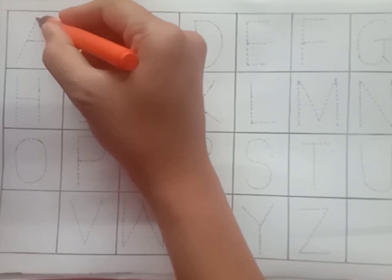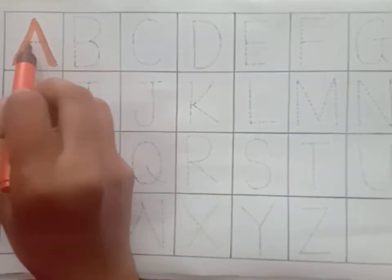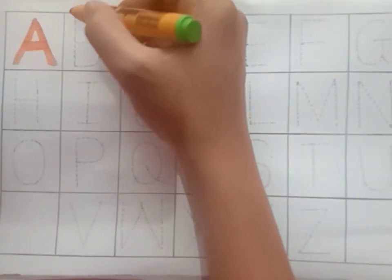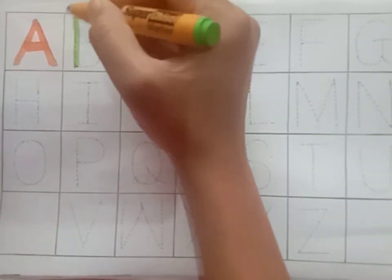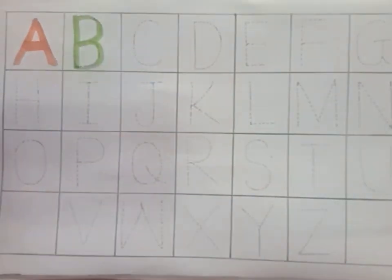Orange color. A. A for apple. Light green color. B. B for ball.